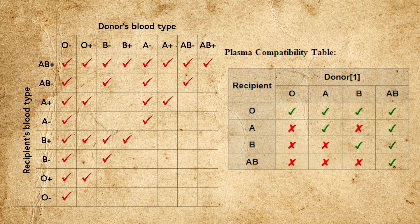Moving on to white blood cells, there are six main types: neutrophils, eosinophils, basophils, bands, monocytes, and lymphocytes. Each type plays a different role in the kind of infection your body is trying to fight. For example, neutrophils kill bacteria by ingesting them — called phagocytosis. Naturally, if you have a bacterial infection, the percentage of neutrophils within your blood would be elevated.